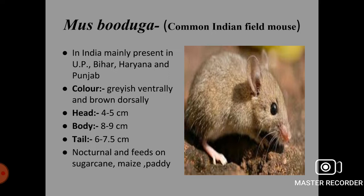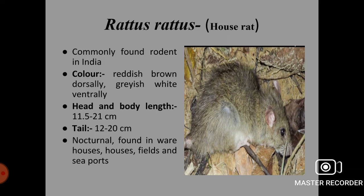Next species is Rattus rattus, the house rat. It is a commonly found rodent in India. The color is reddish brown dorsally and grayish white ventrally. Head and body length is 11.5 to 21 cm, and tail length is 12 to 20 cm. This species is nocturnal and is found in warehouses, houses, fields and seaports.